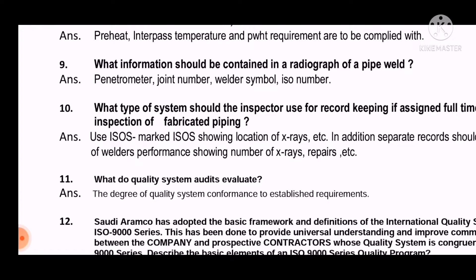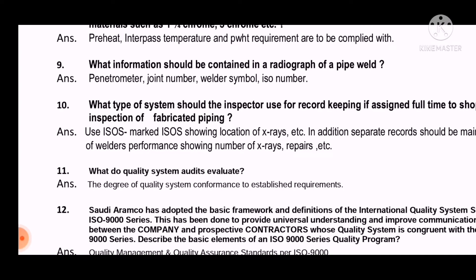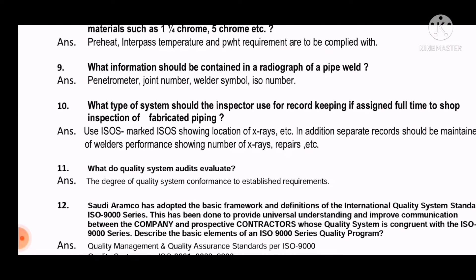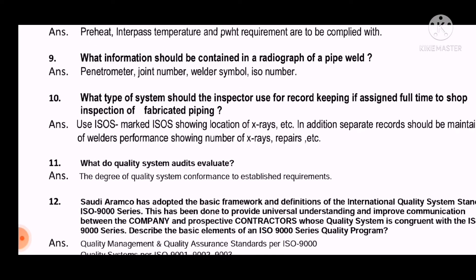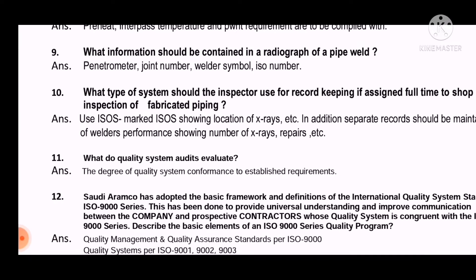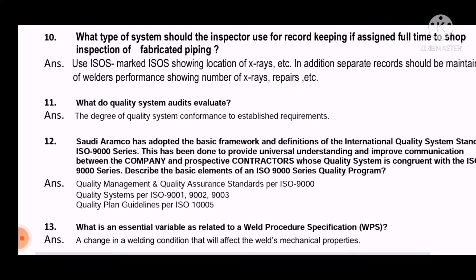Question 10: What type of system should an inspector use for record keeping if assigned full-time shop inspection of fabricated piping? The answer is: use ISOs marked with ISOmetrics showing location of X-rays, etc. In addition, separate records should be maintained of welder performance showing number of X-rays, repairs, etc.